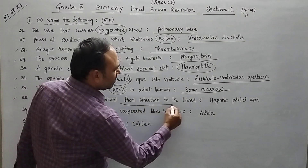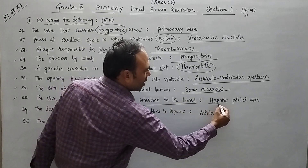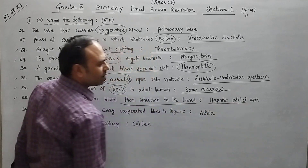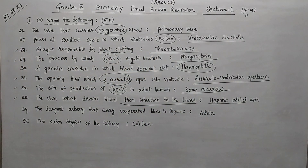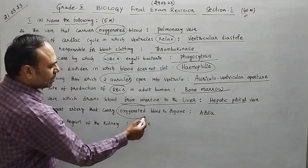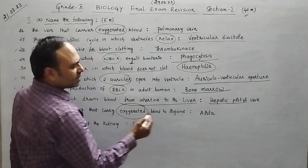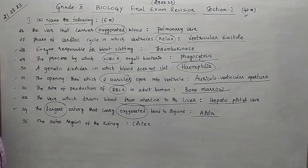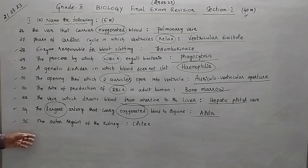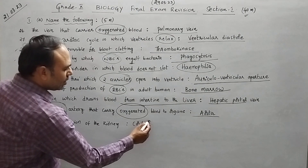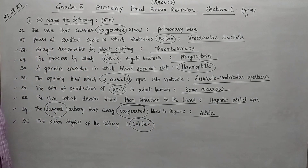Question 32: the site of production of red blood corpuscles — in adult humans they are produced inside the bone marrow. Question 33: the vein which drains blood from the intestine to the liver — that is the hepatic portal vein. Question 34: the largest artery that carries oxygenated blood — that is the aorta.